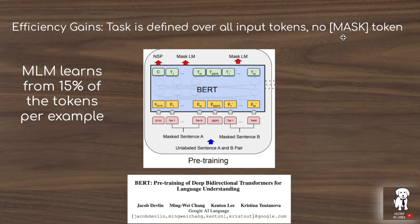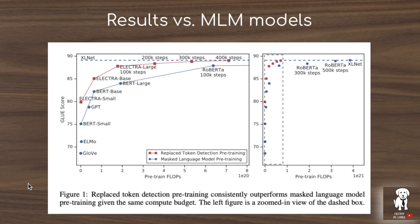This plot shows the results of applying the ELECTRA pre-training task with different levels of compute, compared to models that use autoregressive masked token prediction such as GPT, BERT, and RoBERTa. The ELECTRA Small, Base, and Large models are all able to achieve high performance given a lower number of compute operations.